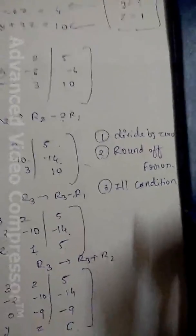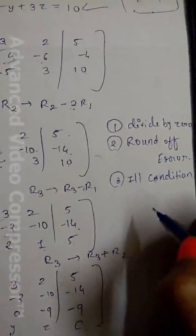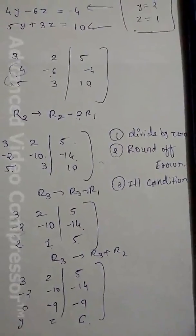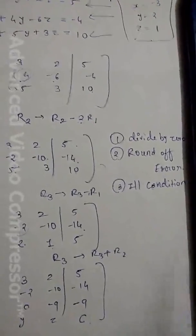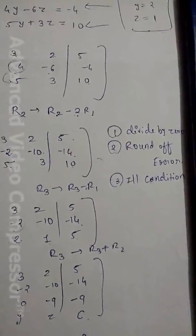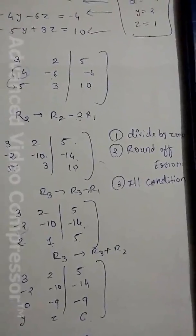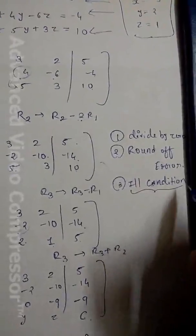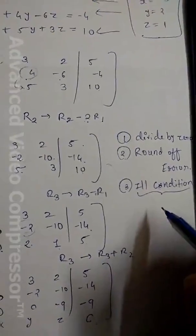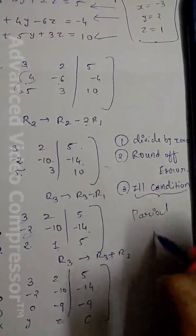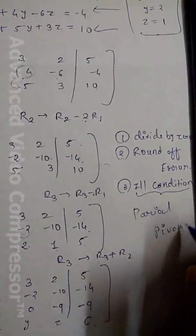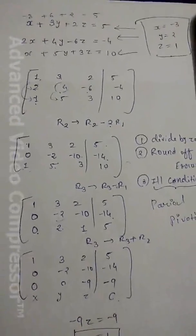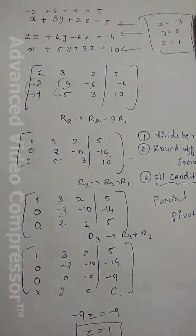The third pitfall is ill-conditioning. This means that when, for example, the coefficient of x is 1 and y is 10 with answer 10.5, a small change in the coefficients produces a large difference in the solution — that is an ill-conditioned system. To handle ill-conditioning we use partial pivoting, which is covered in the next video. Thank you for watching and please subscribe to my channel.